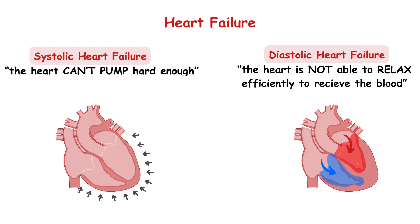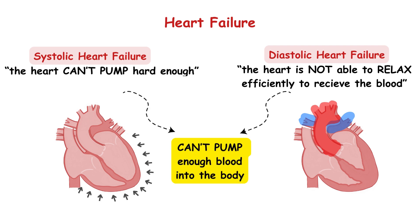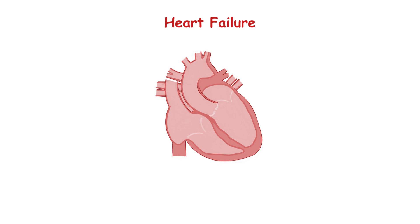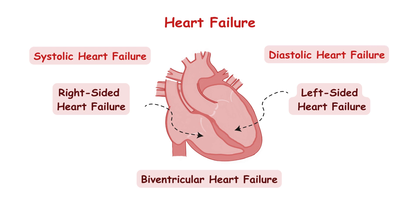Because the heart received less blood, less blood is pumped out into the body. So in both cases the heart cannot pump enough blood into the body to meet its needs. Depending on which ventricle is affected, we can have left-sided heart failure, right-sided heart failure, or biventricular heart failure when both ventricles are affected. Each of them can have systolic or diastolic heart failure. To understand how these conditions affect the patient, we must have a great knowledge of the physiology of the heart and the pathophysiology behind heart failure.